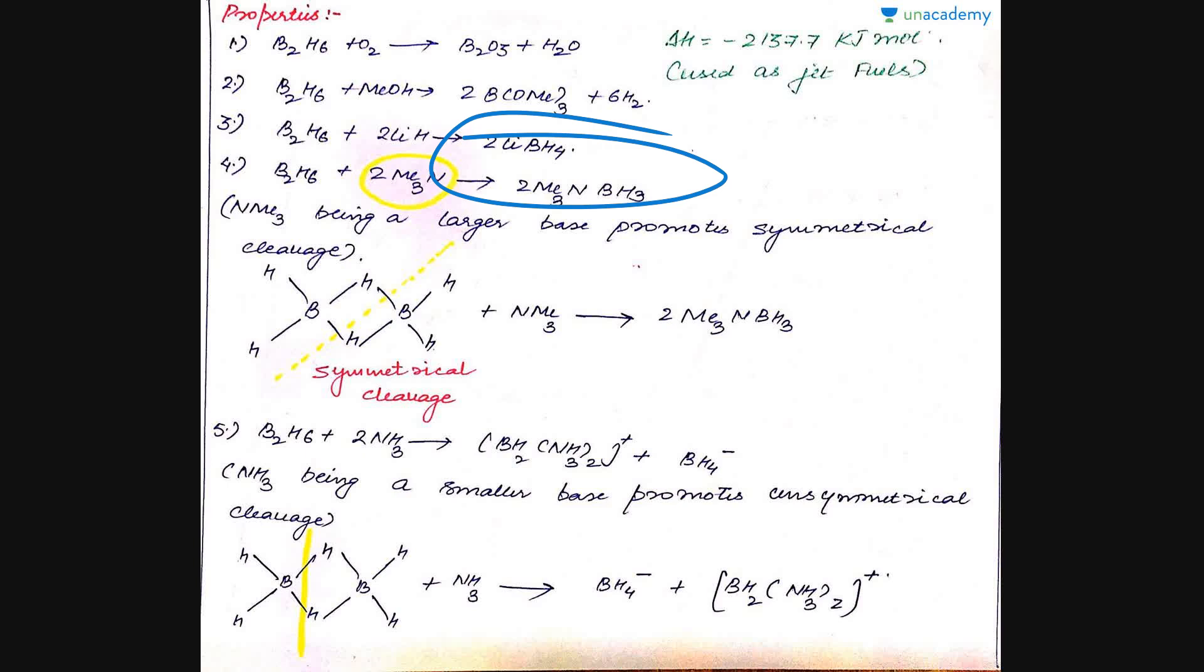Next is the treatment of diborane with base. Basically, larger bases lead to symmetrical cleavage of the diborane molecule. Like here, we are using trimethylamine; being a bulkier base, it divides the diborane molecule into two equal halves and we get the compound Me3NBH3. Next, on treatment with smaller bases such as ammonia, it leads to unsymmetrical cleavage of the compound and we are left with BH4 minus unit and one BH2 unit substituted by the ammonia group.